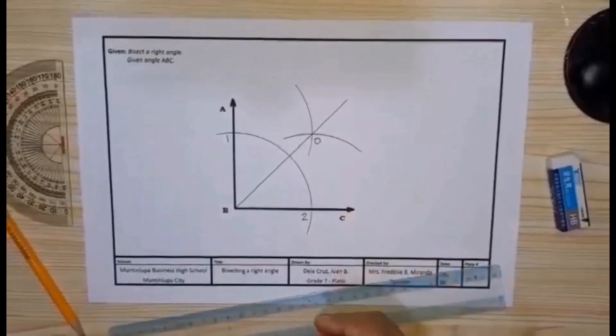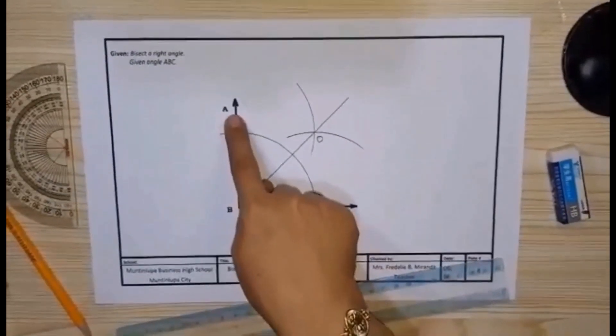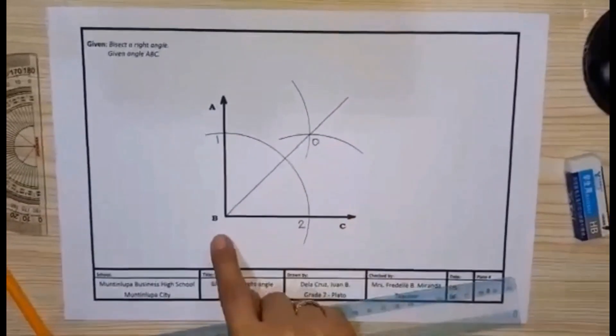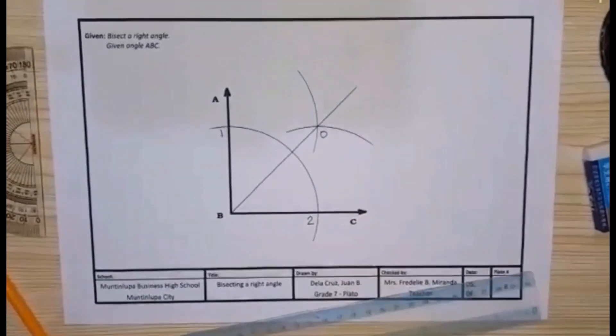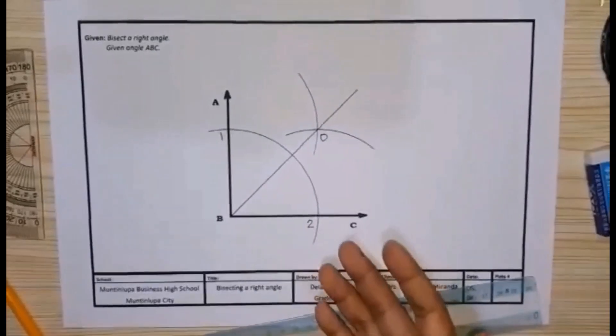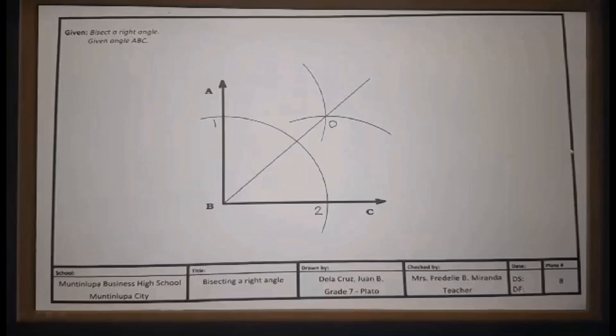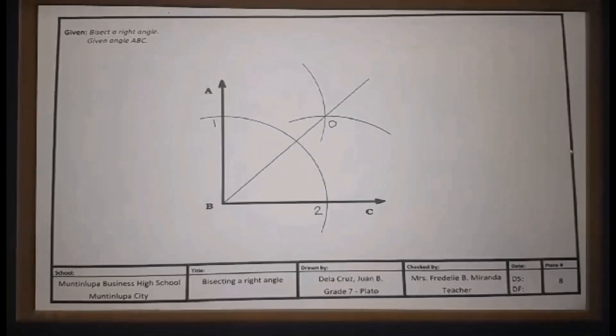We have the line bisector that is exactly the half of the angle. Angle ABO and angle OBC are the same measurement. We already bisect the right angle. Are you done? Great. So how did you find the activity? It is so easy isn't it? Hold on everyone, we've only just begun.